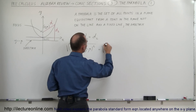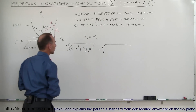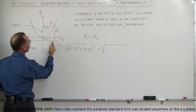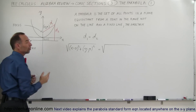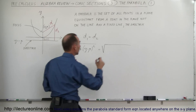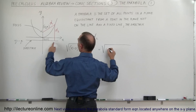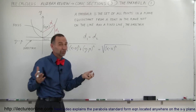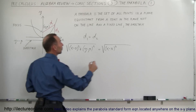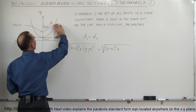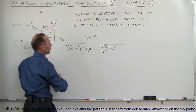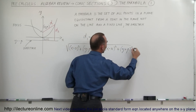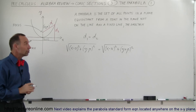Now this should equal the square root of distance d2. Distance d2 can be found as follows: there is no horizontal displacement, so we have (x minus x) squared, which is 0, and to that we add the y distance plus the p distance, so that would be (y plus p) squared. So d2 is the square root of 0 plus (y plus p) squared.